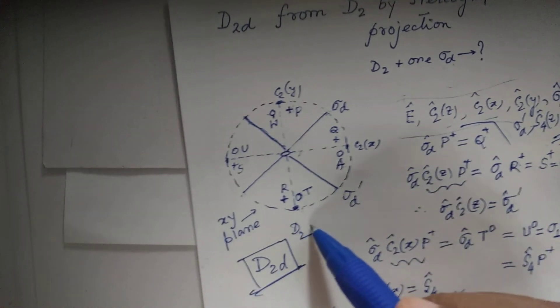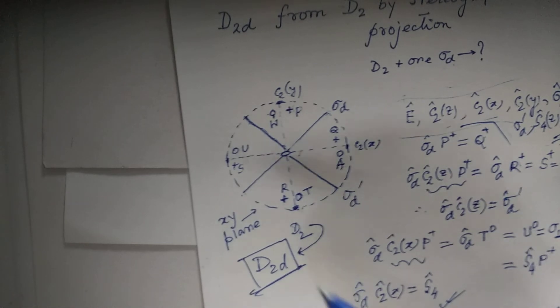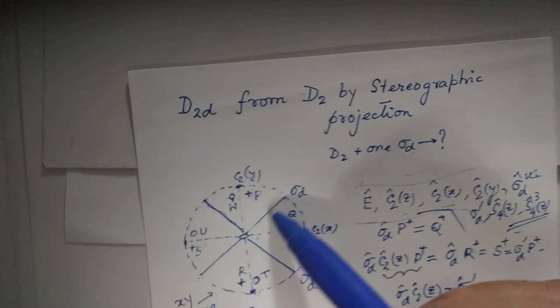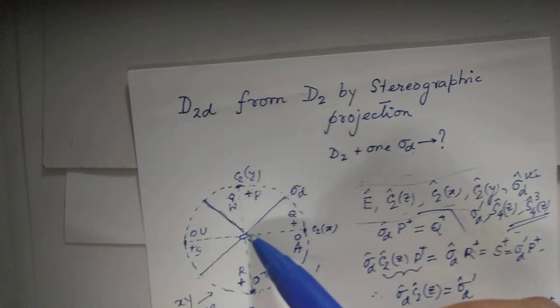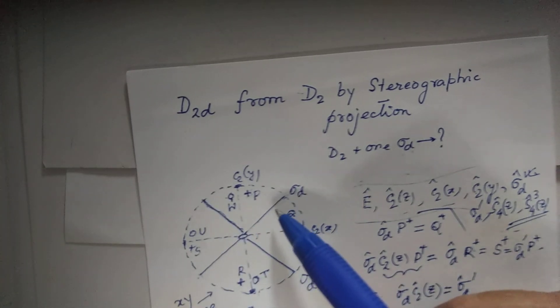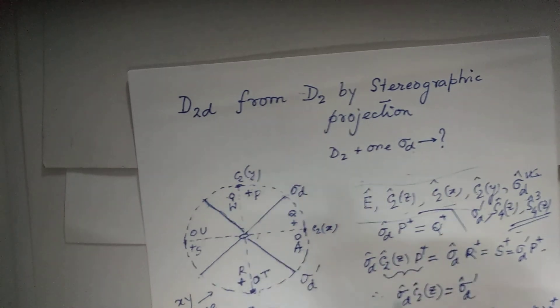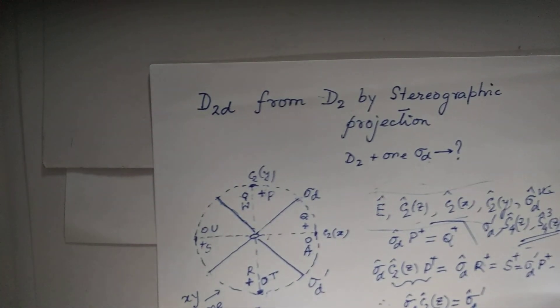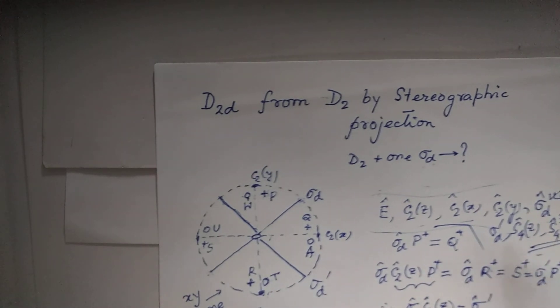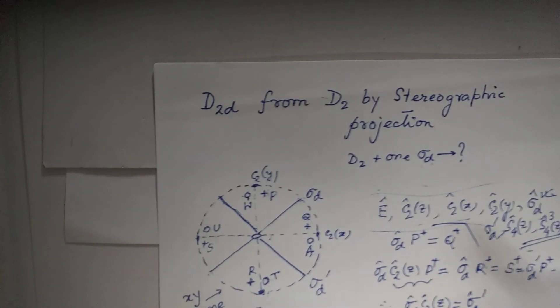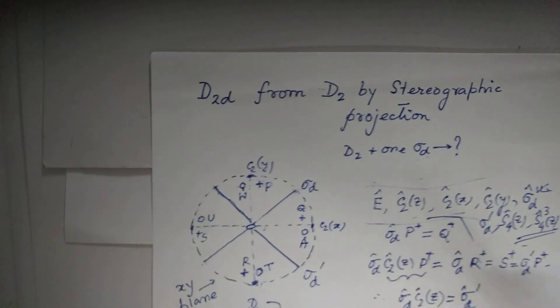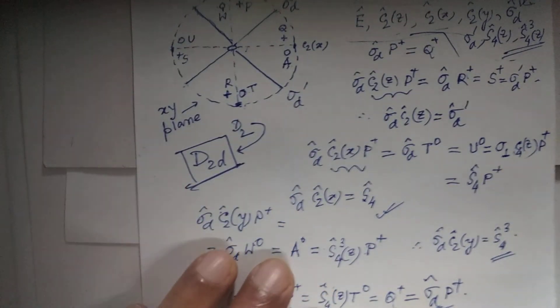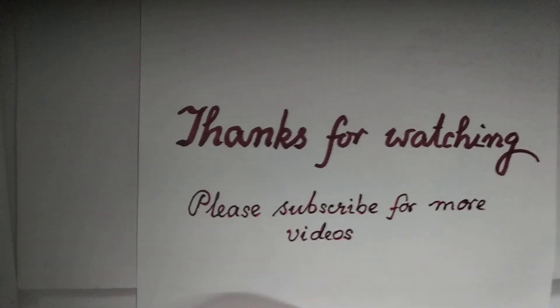We started from D2 and arrived at D2d just by assigning one sigma_d plane — the other sigma_d' plane is a consequence of the presence of one sigma_d plane. In this way we can extend our illustration with more point groups, which I will do in my next videos. Thank you very much for your patient hearing.